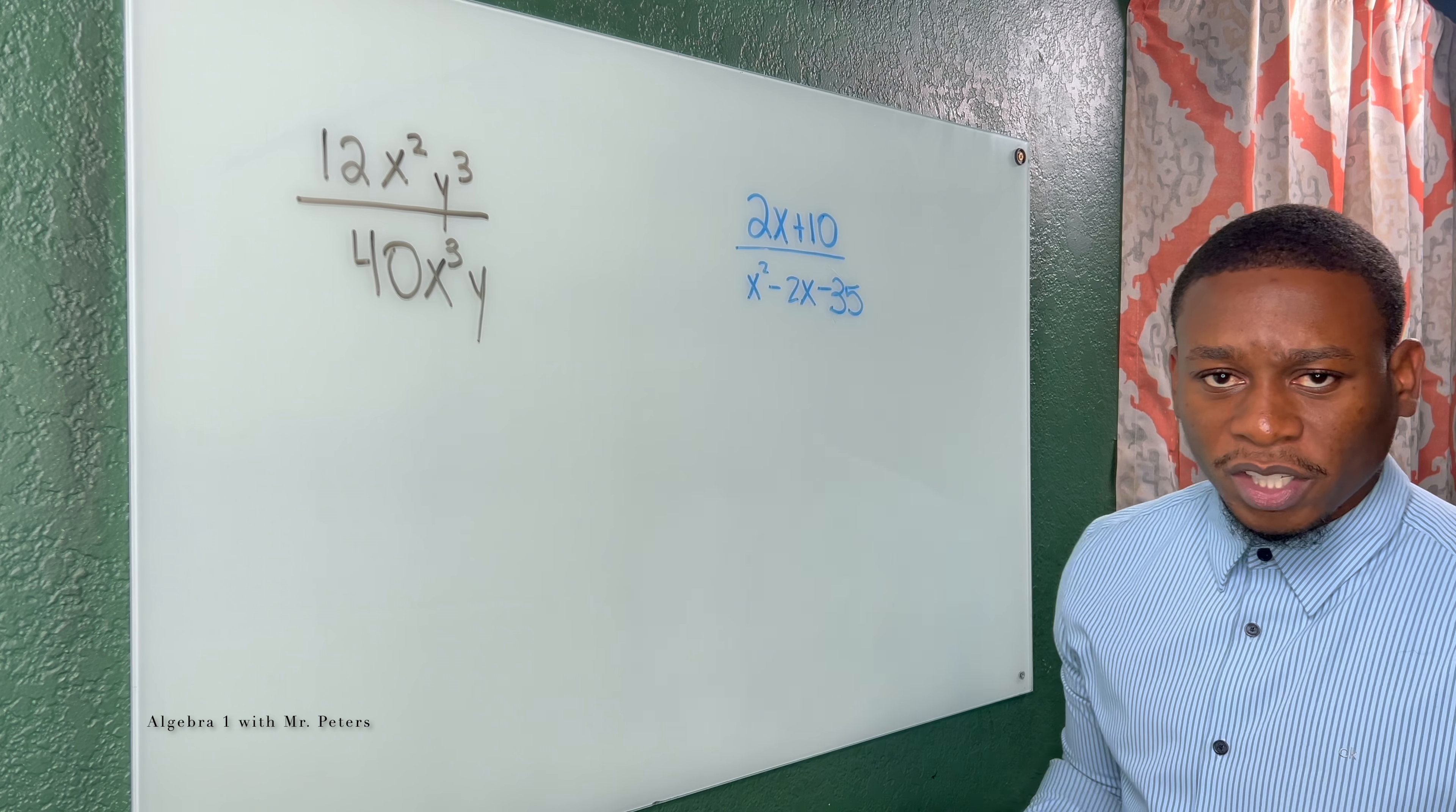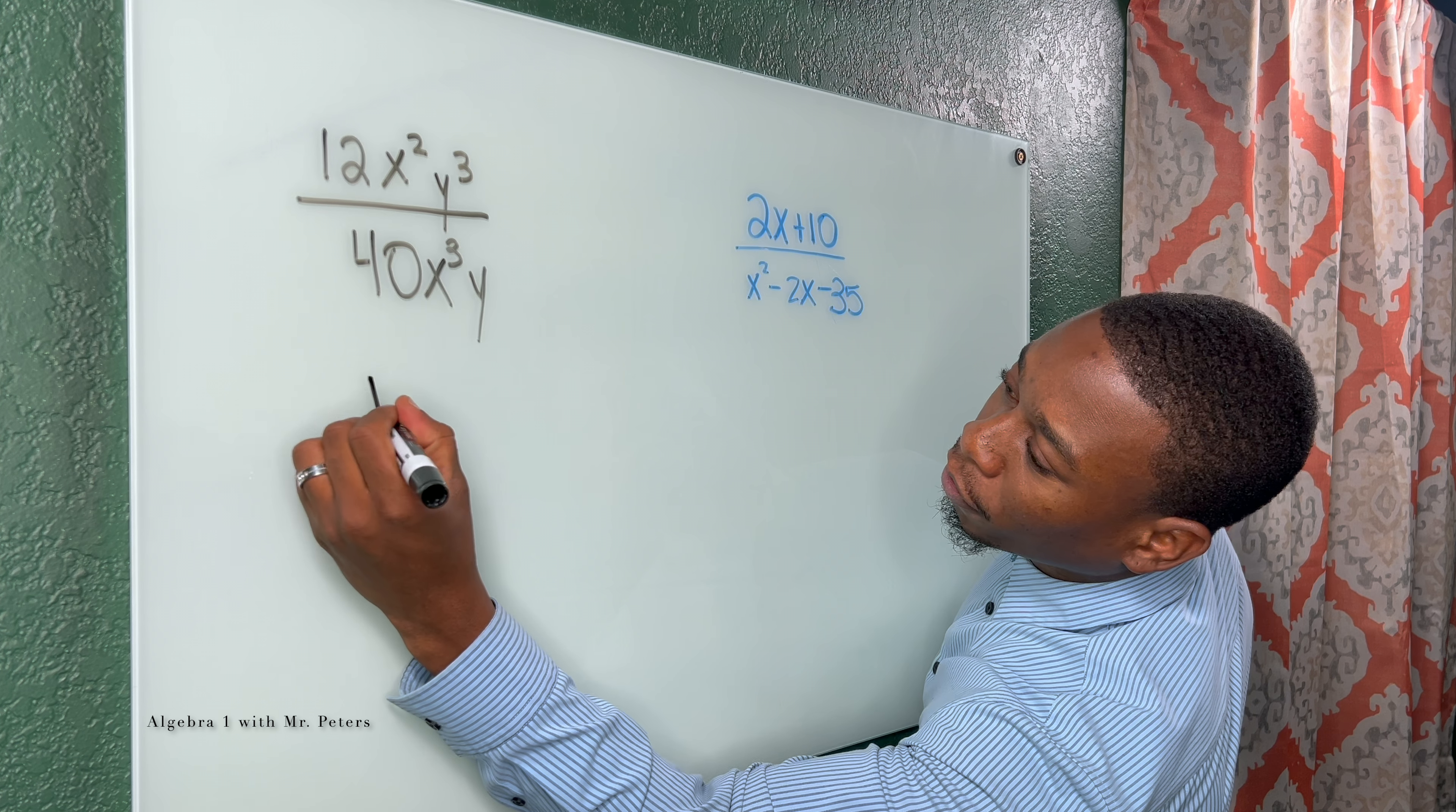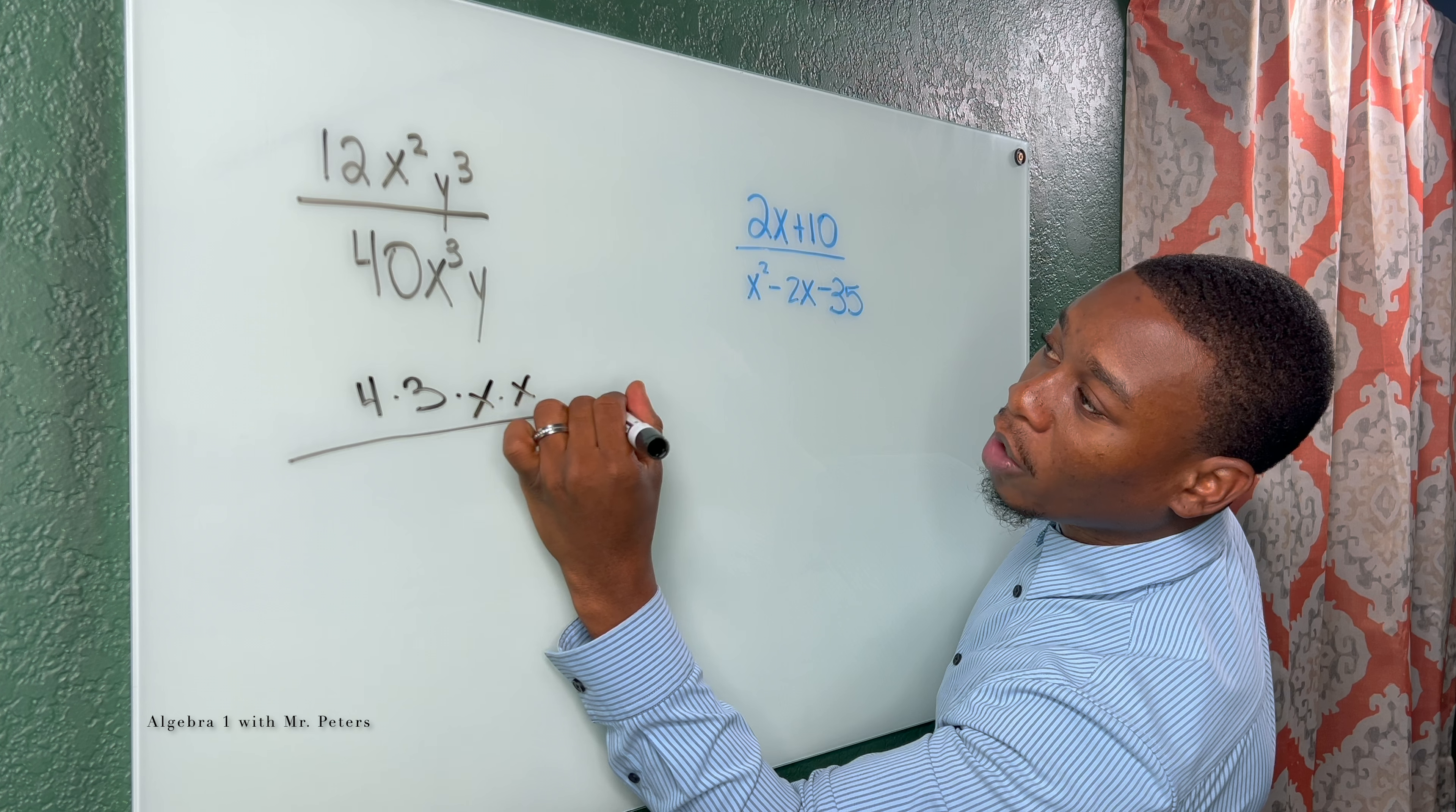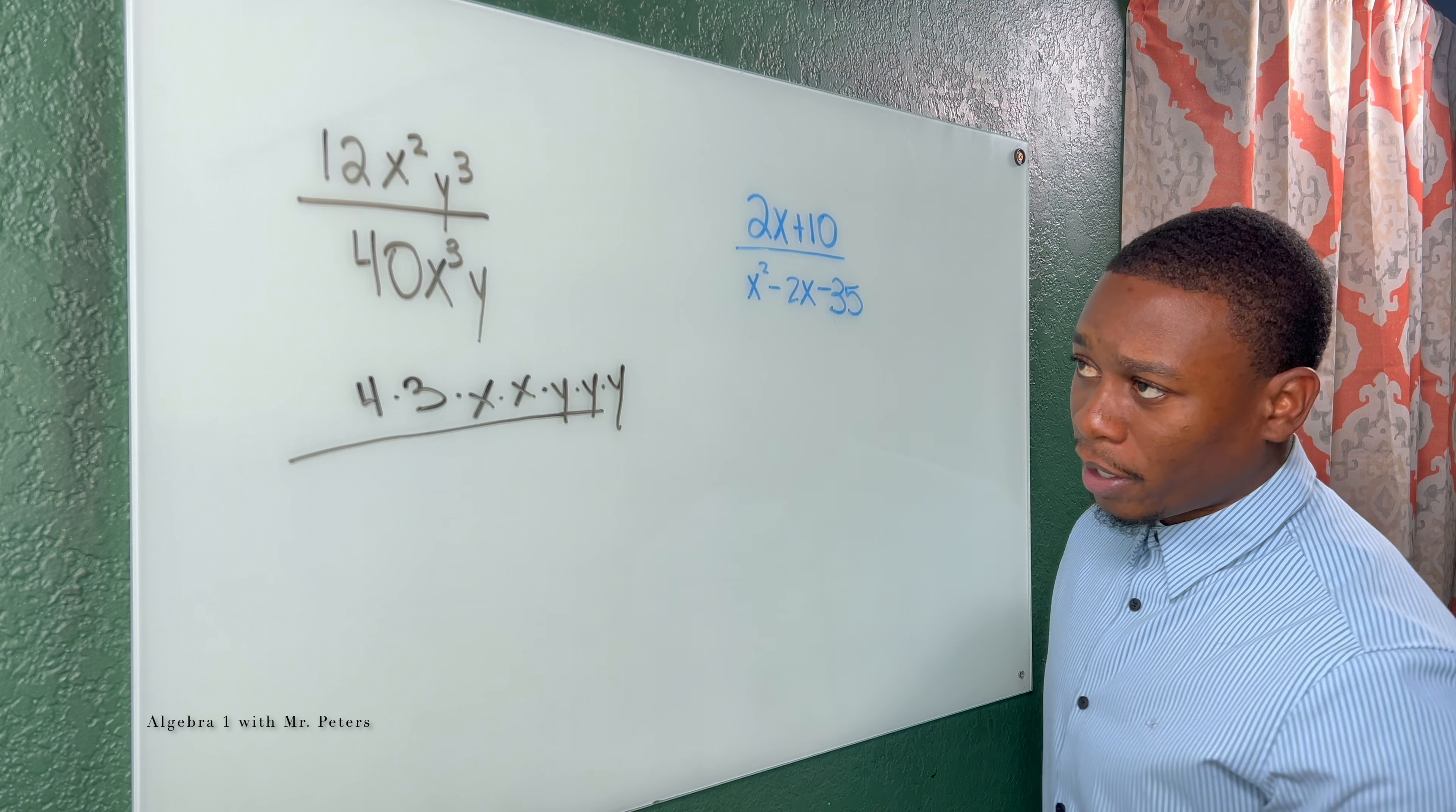So when I look at my first example, there's two ways we could break this down. I'm going to start off with the easier method. We could break down 12 as 4 times 3. We want to use similar factors. And then x squared is just x times x. And then when we look at y to the third, this is y times y times y. All we're doing is just writing it out.